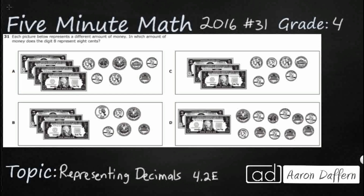So we've got four different pictures of some dollars and cents, and what we need to do is find where the eight digit represents eight cents. So we're looking for eight cents — it could be more than eight cents, we're just looking for an eight in that hundredths place. So let's start counting money.